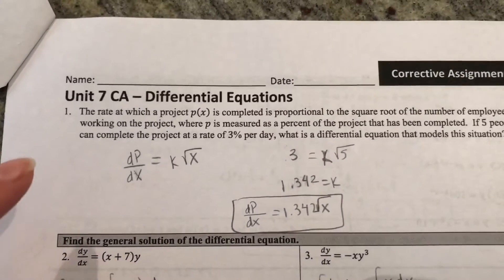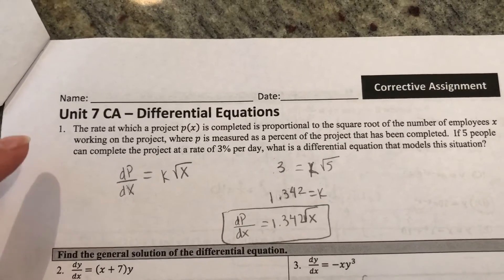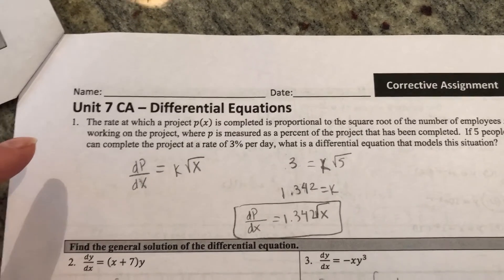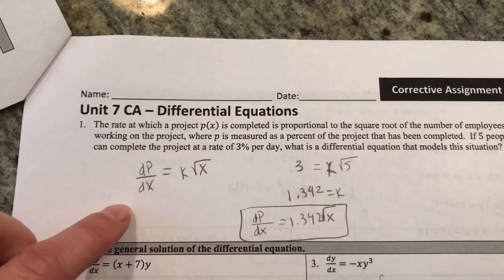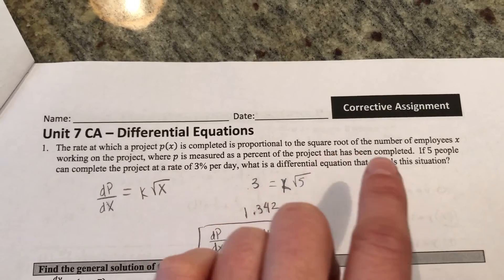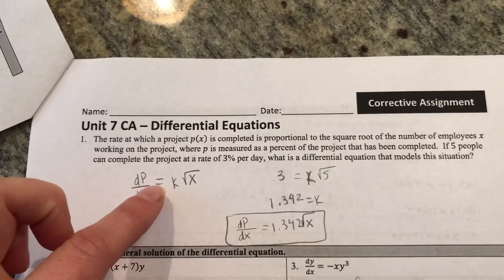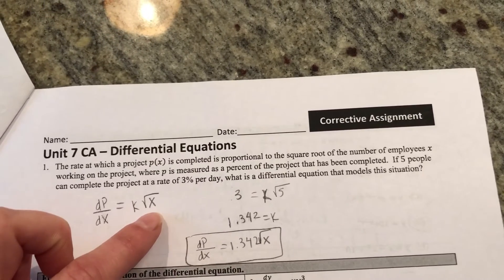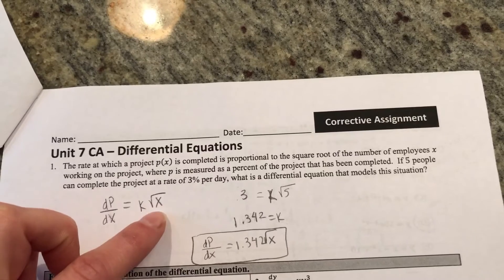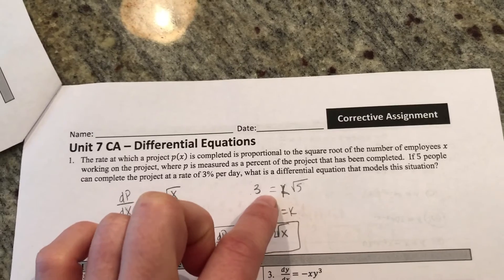For number one, the rate at which a project is completed, so the rate of change of p, would be dp/dx. They're telling you that it's proportional to the square root of the number of employees x. Proportional always means equals a constant times, so dp/dx = k√x.